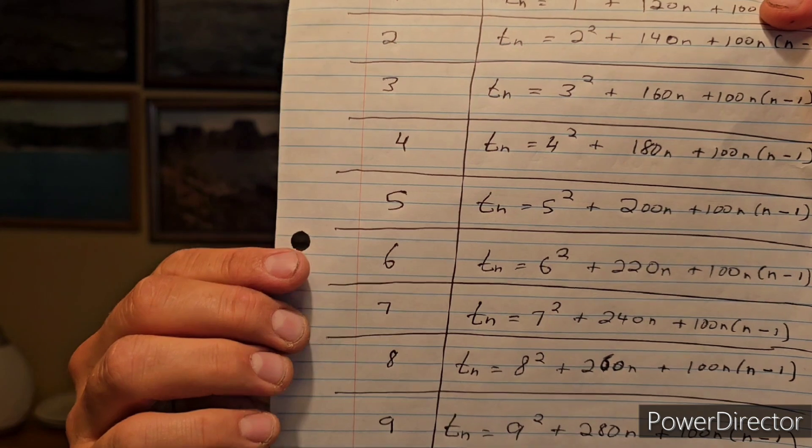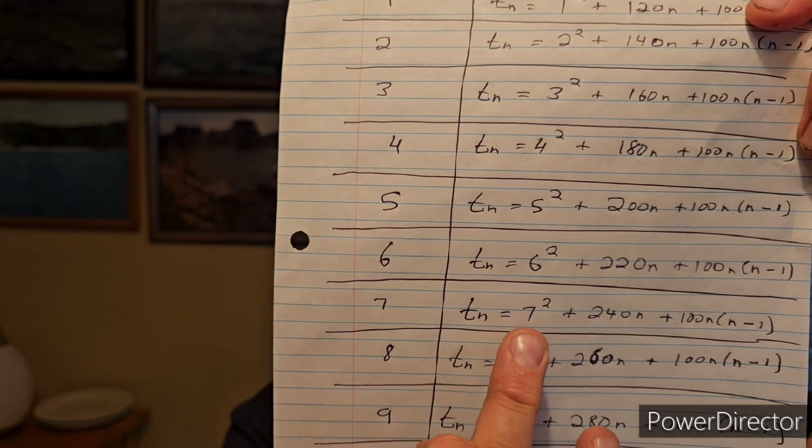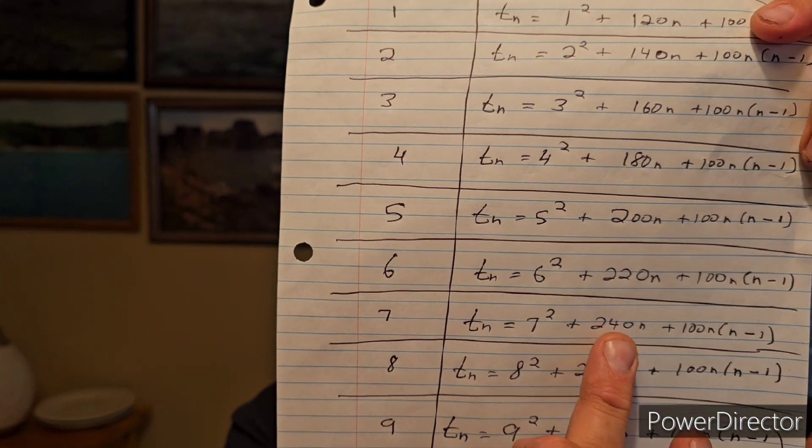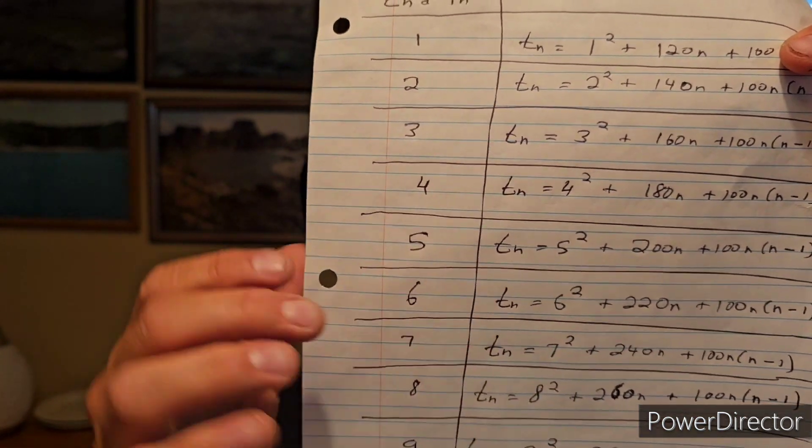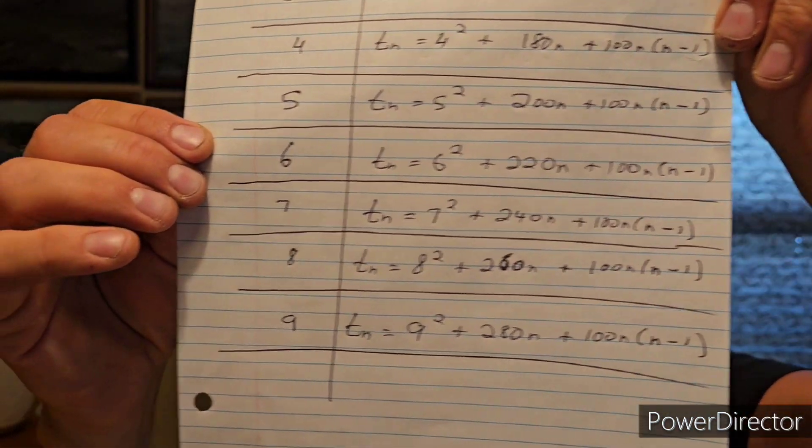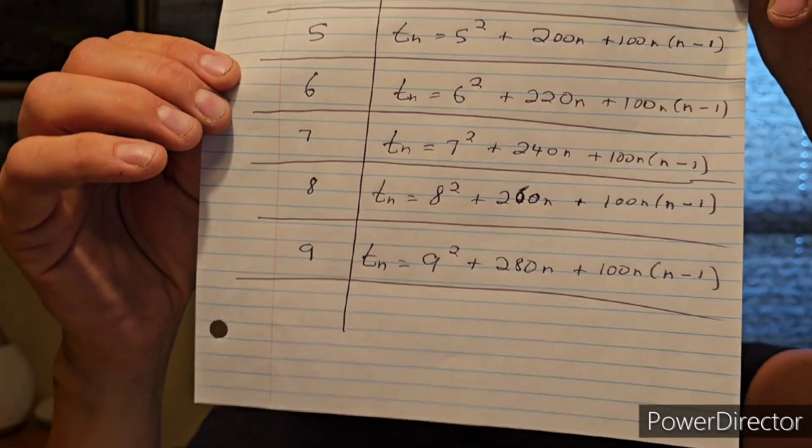Now, let's do a number ending in 7. Let's do 27. So it would be T2 for this one here. It would be 7 squared, 49, plus 2 times 240, 480, plus 200. It would be 680 plus 49. And you guessed it. That is 729, which is 27 squared.